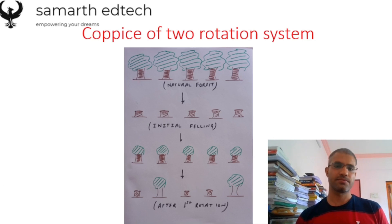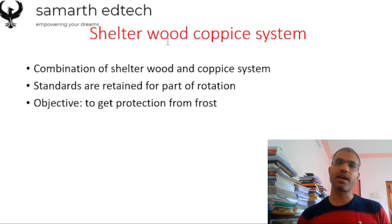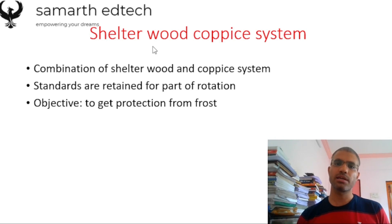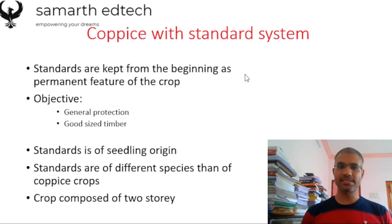The third subtype is the Shelterwood Coppice System. It is actually a combination of your shelterwood system and coppice system. Both systems are combined together in this silvicultural operation. The objective is to protect the given forest from frost conditions, so this type of silvicultural operation is generally implemented in frost areas.